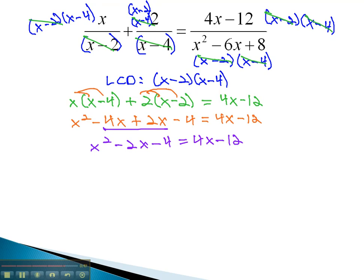And then with the x squared, we need to move everything to the same side, by subtracting 4x and adding 12 to both sides. This gives us x squared minus 6x plus 8 equals 0.